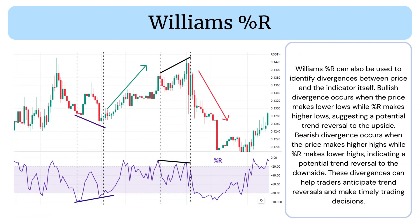Williams Percent R can also be used to identify divergences between price and the indicator itself. Bullish divergence occurs when the price makes lower lows while Percent R makes higher lows, suggesting a potential trend reversal to the upside. Bearish divergence occurs when the price makes higher highs while Percent R makes lower highs, indicating a potential trend reversal to the downside. These divergences can help traders anticipate trend reversals and make timely trading decisions.